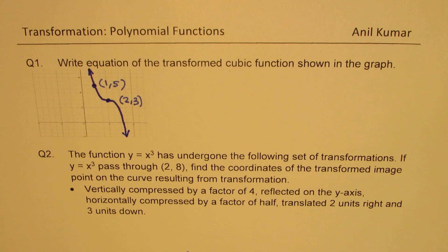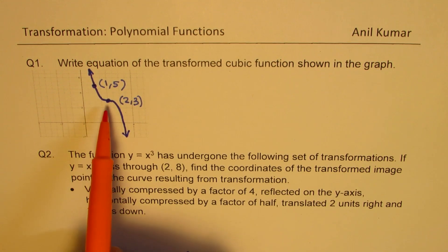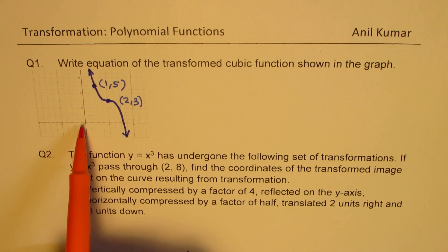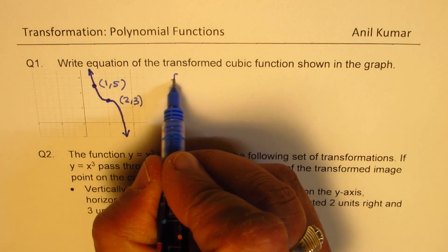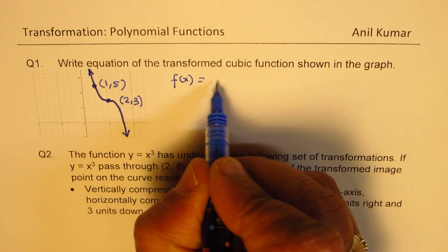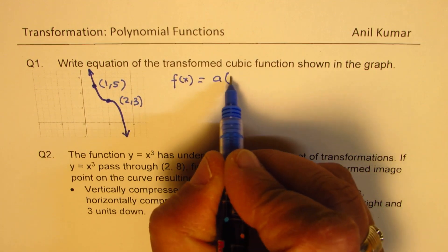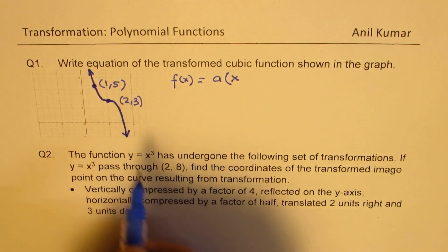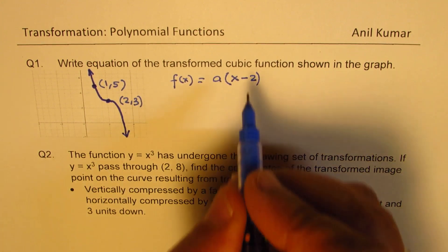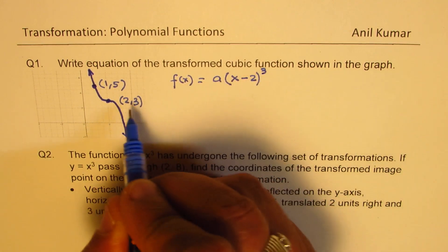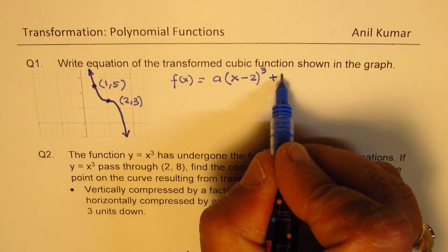In question number 1, we are given a cubic function whose critical point, which should have been at the origin, has been translated two units to the right and three units up. So that gives you that the function f(x) can be written as a times (x minus 2), since it moves two units to the right, whole cube, it is a cubic function, plus 3 as it moves three units up.